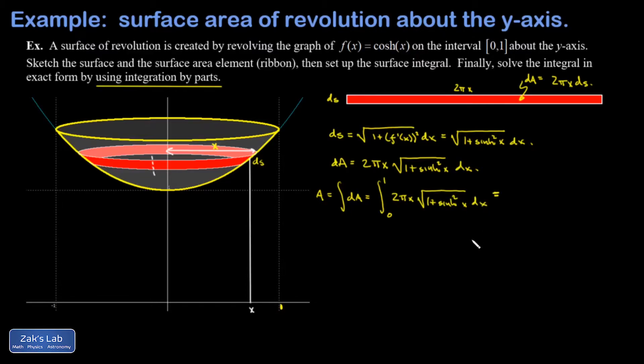Here we have to remember an identity for sinh and cosh: 1 plus sinh squared equals cosh squared. Taking the square root of that just gives the cosh function, which simplifies the integral nicely.